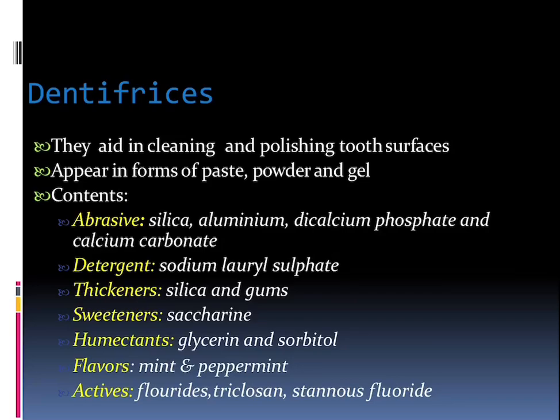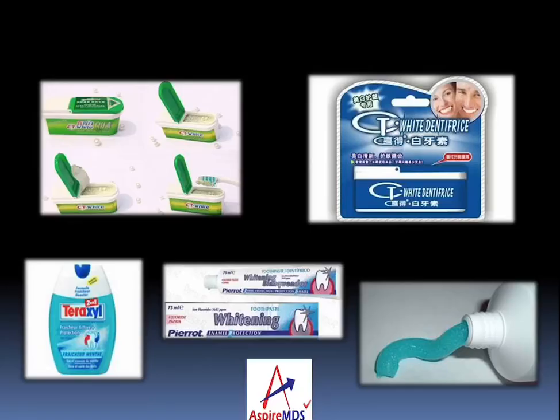Talking about dentifrices: they aid in cleaning and polishing the tooth surface and appear in the forms of paste, powder, and gel. The abrasive content includes silica, aluminum, dicalcium phosphate, and calcium carbonate. The detergent providing foaming action is sodium lauryl sulfate. Thickness is provided by silica and gums, sweeteners are artificial like saccharin, humectants are glycerin and sorbitol, flavors can be mint and peppermint. Active ingredients like fluorides, triclosan, or stannous fluoride can be added as per the patient's requirement — anticarious or desensitizing paste.